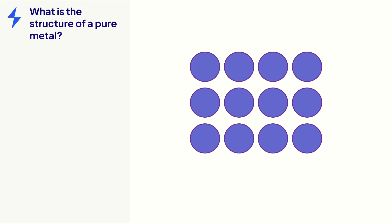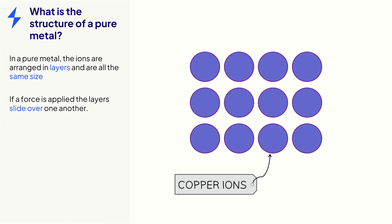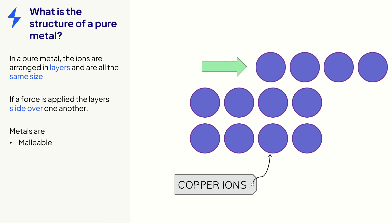To understand why alloys are used instead of pure metals, we need to look at their structures. We will use copper as an example, but remember that pure metals all have a similar arrangement of the metal ions. If a force is applied to the regular lattice of a pure metal, the layers can slide over one another, meaning that metals are malleable and ductile.